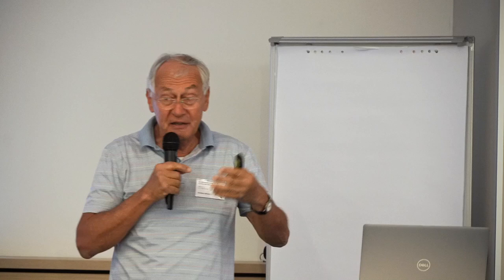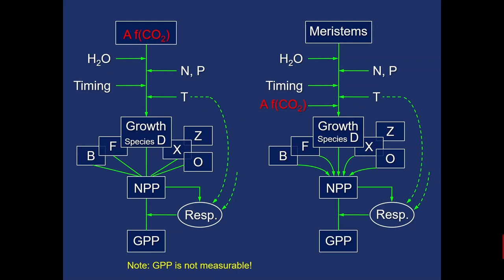Looking at this picture from your school days makes it clear that unless you have all 22 essential elements present, carbon alone can do nothing. I tried to encapsulate the classical mechanistic way of thinking about how plant growth and productivity come about. I put an old and a new vision side by side. On the left column you see at the top photosynthesis as a function of carbon dioxide as the driver of everything that follows.